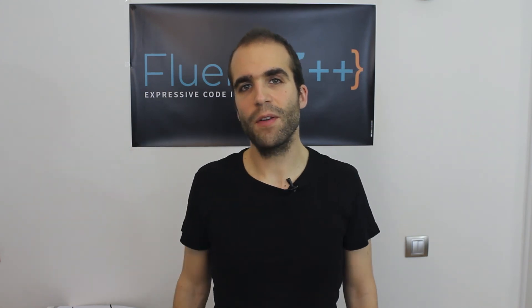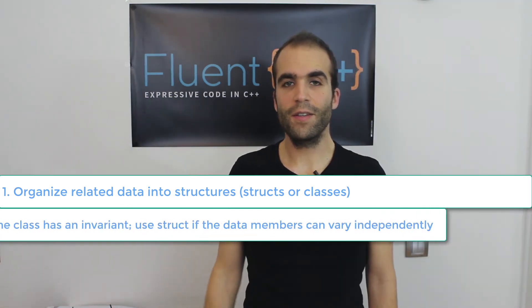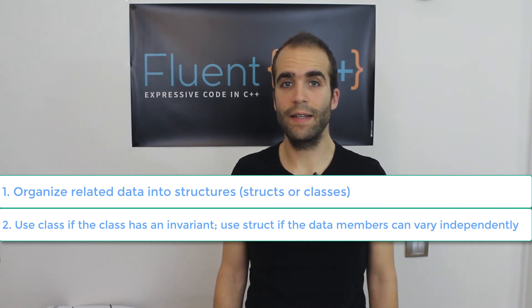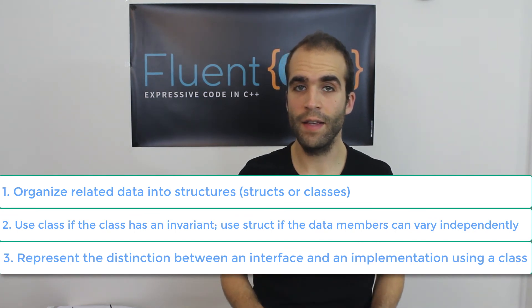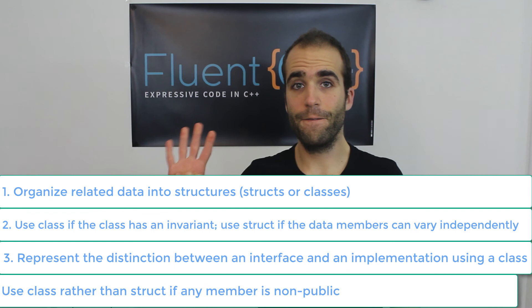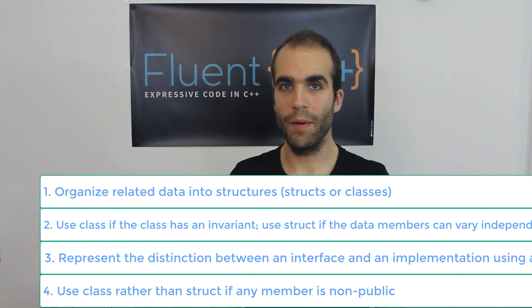We'll end by reading four of the C++ Core Guidelines that inspired this video. One: organize related data into structures, whether struct or class. Two: use class if the class members have an invariant; use struct if data can vary independently. Three: represent the distinction between an implementation and an interface by using a class. Four: use class rather than struct if any member is not public.